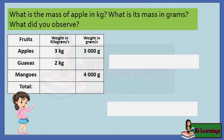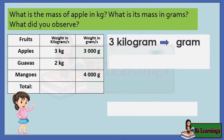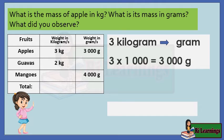What is the mass of the apples in kilograms? What is its mass in grams? What did you observe? 3 kilograms to grams — we know that 1 kilogram is equal to 1,000 grams, so we multiply 3 kilograms by 1,000. 3 times 1,000 equals 3,000 grams.